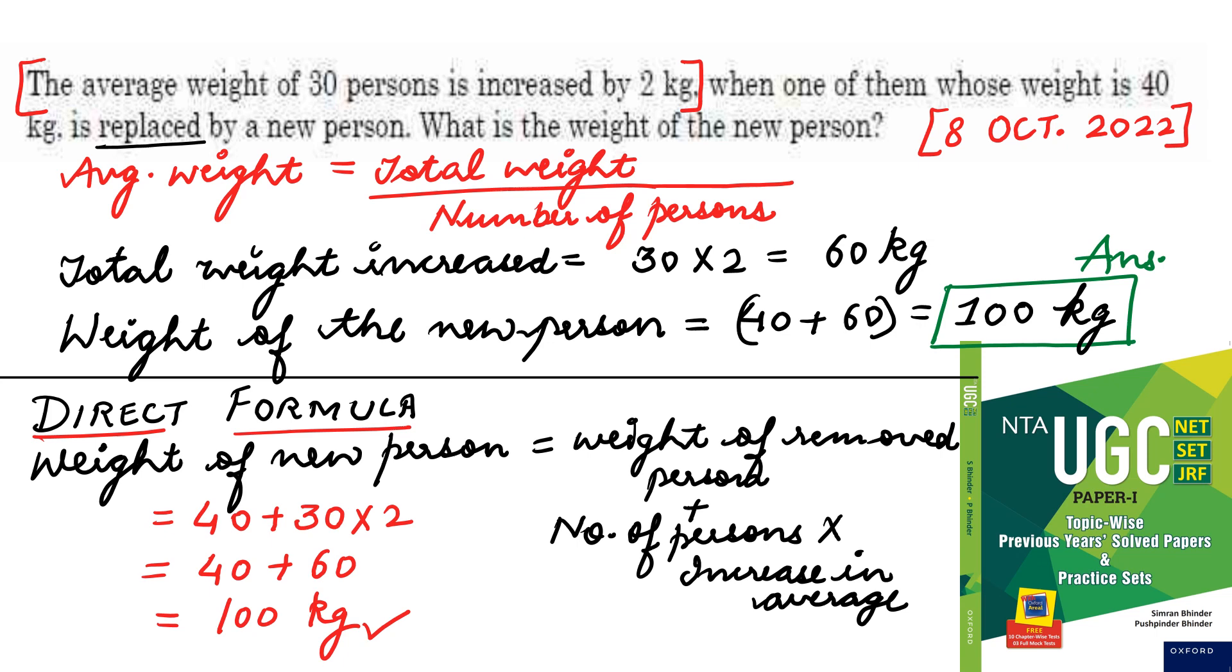Let's understand this. Average weight's basic formula is equal to total weight of the persons divided by number of persons. But in this question, since it is given the average weight has increased by 2 kg, that means the total weight is also increased by 30 into 2 is equal to 60 kg. I hope you understand this. I repeat, if average weight of 30 persons increased by 2 kg, then the total weight increased by 30 into 2 is equal to 60 kgs.